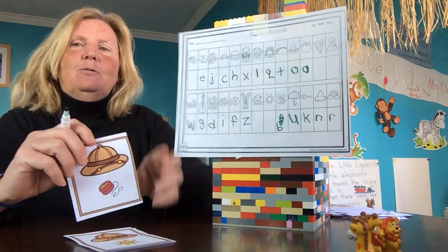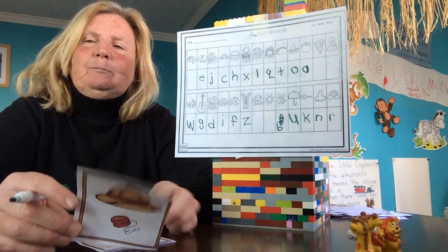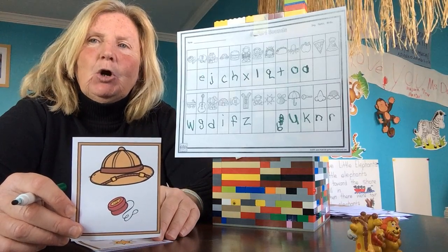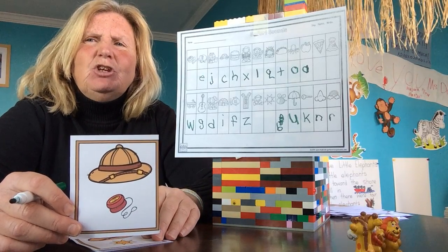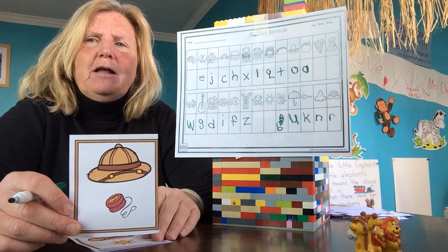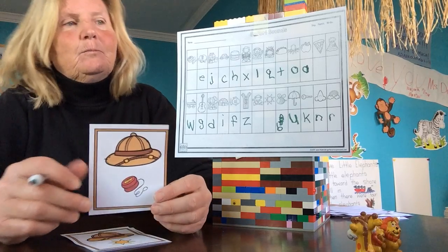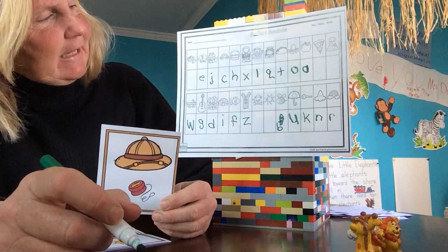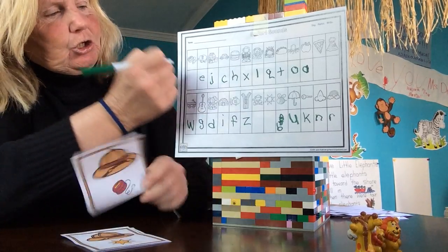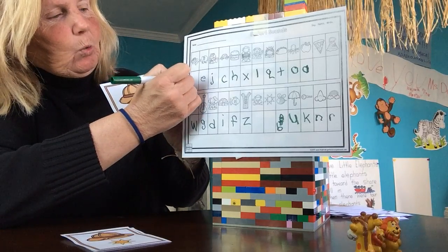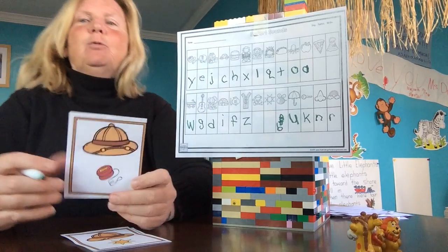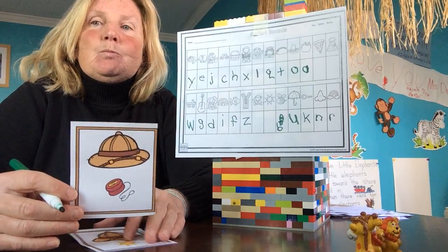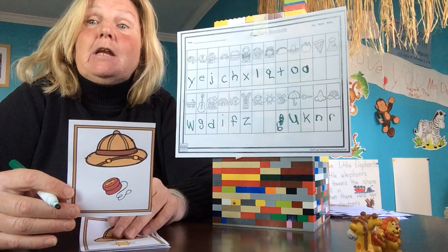What do I got — yo-yo! What does yo-yo start with, Alice? You got it, sweetie — a Y. Yo-yo. And Alice, what do you hear at the end? Good, honey — an O.